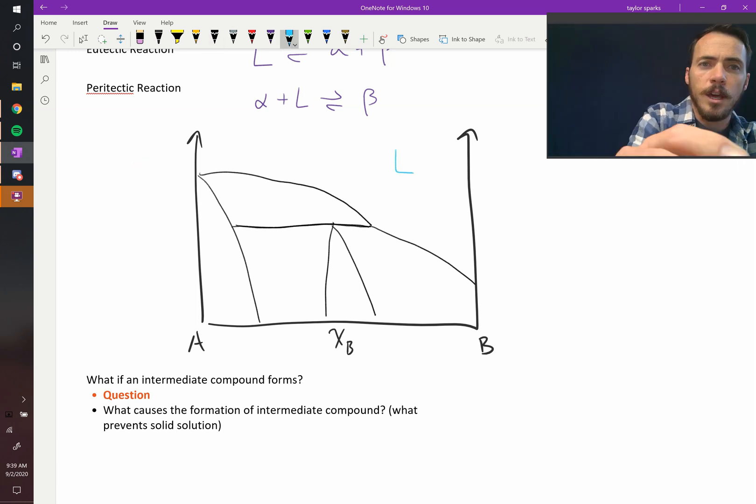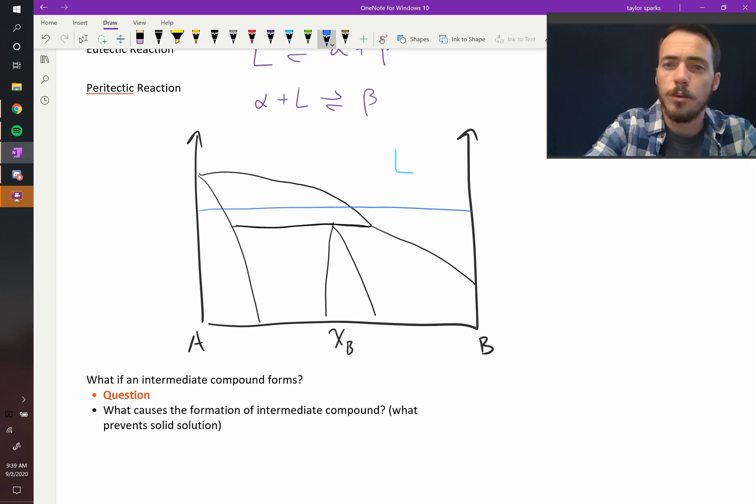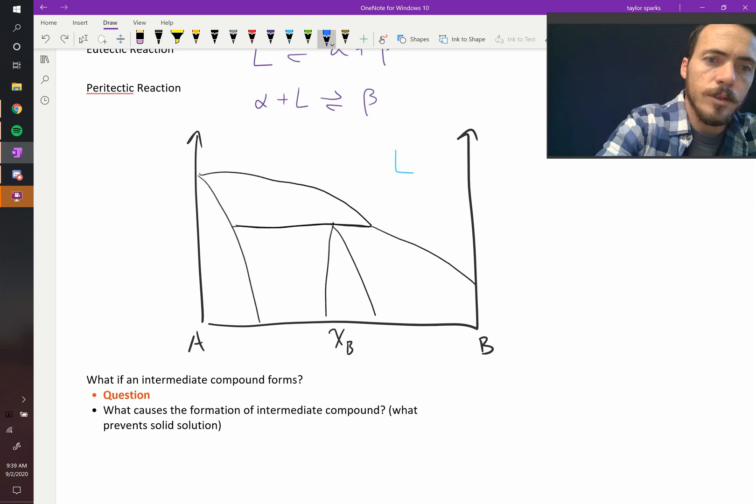We could pick any temperature, so let's pick this one. We can draw a flat line, and it has to follow the rule. If that's a single phase, that must be a two phase, and that must be a single phase, right? Let's call this a solid phase alpha, which makes this a liquid plus alpha right there.